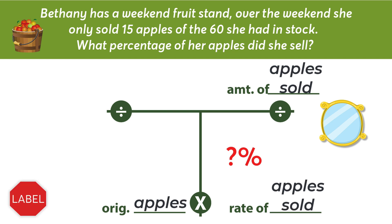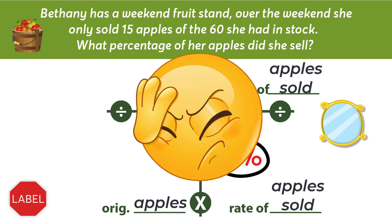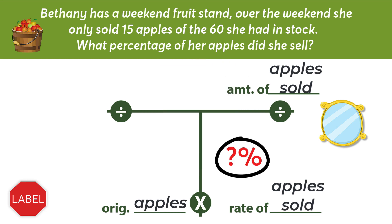Now that we've labeled all three spots, we can begin to fill in the numbers. Remember, the only number that you can ever fill in before labeling is the rate. Never ever try to put numbers in before you label the other spots. 50% of the time when a student gets a T-Bar problem wrong, the student tried to put in a number before labeling. Don't be that student. The only number you can enter into a T-Bar without labeling is that initial rate.